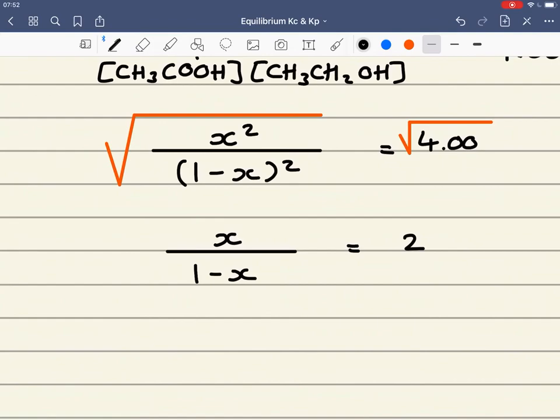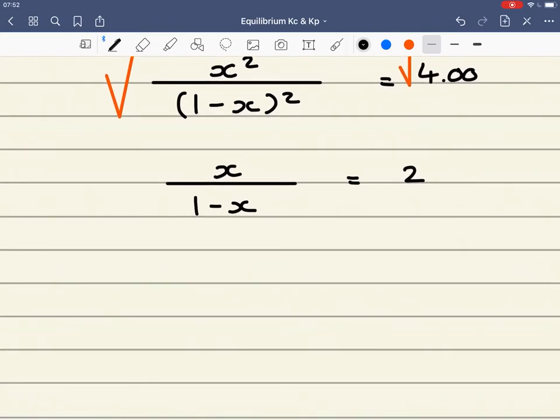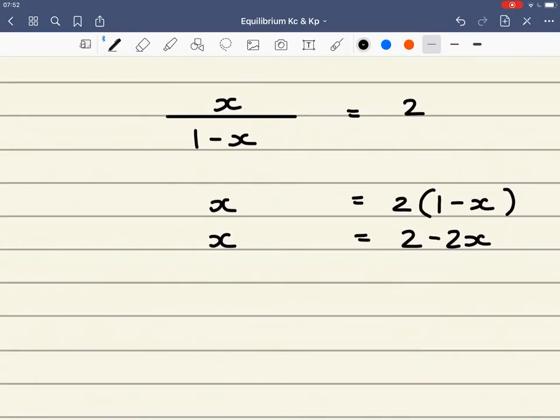And here it's just solving for X. It should be trivial, but we'll go through it very quickly. Multiplying both sides by (1 minus X), X then is equal to 2 times (1 minus X). Open the brackets out. 2 times 1 is 2. 2 times minus X is minus 2X. Add 2X to both sides. That gives me 3X equals 2. And then divide both sides by 3.